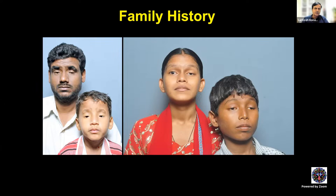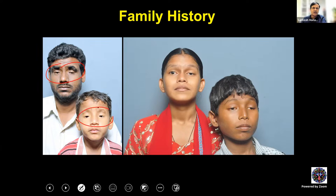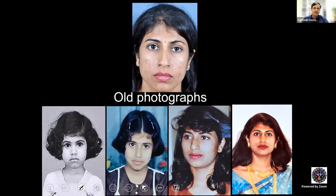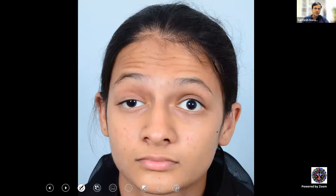In congenital ptosis, family history is important. Patients with blepharophimosis can have inherited ptosis, and patients without blepharophimosis can also have inherited ptosis — both autosomal dominant and recessive patterns are known. In patients without a clear history, ask for older photographs. For example, a patient may claim childhood ptosis, but photographs reveal it only appeared during teenage years, indicating an aponeurotic process.